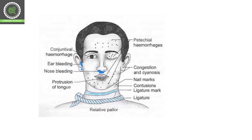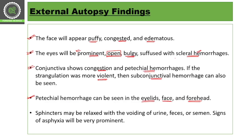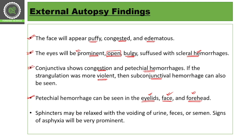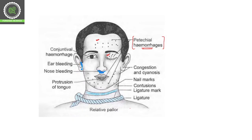Petechial hemorrhages can be seen in the eyelids, face, and forehead. The sphincters may be relaxed with release of urine, feces, or semen. Signs of asphyxia will be very prominent — extremely prominent in case of strangulation.